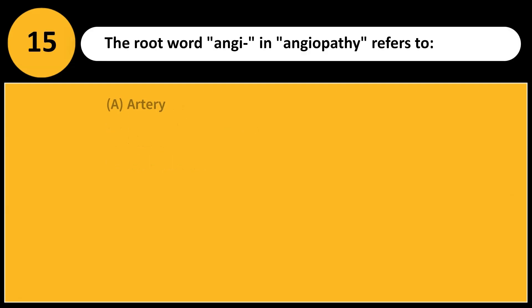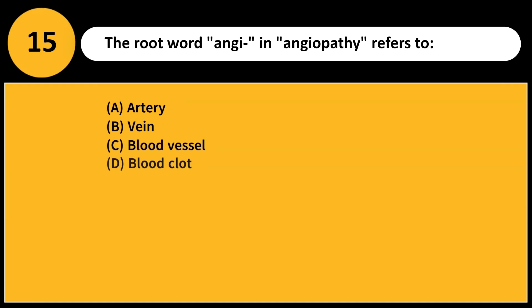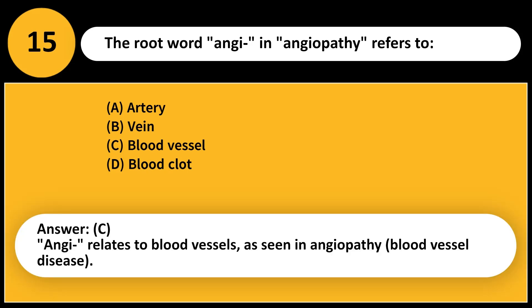The root word angi- in angiopathy refers to: A. Artery B. Vein C. Blood vessel D. Blood clot. Answer: C. Angi- relates to blood vessels, as seen in angiopathy — blood vessel disease.